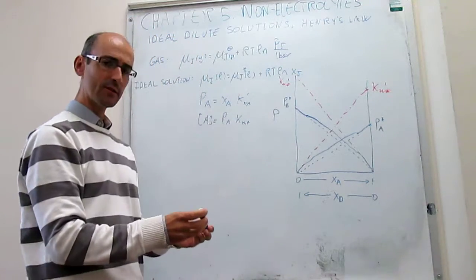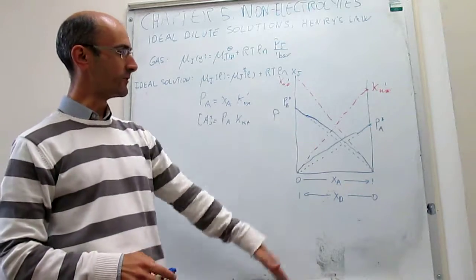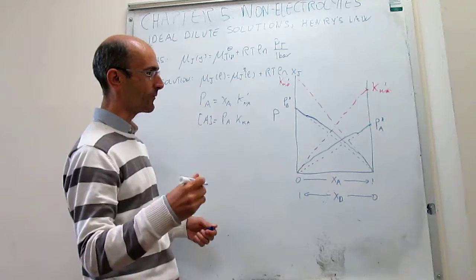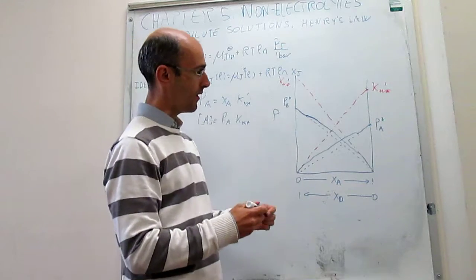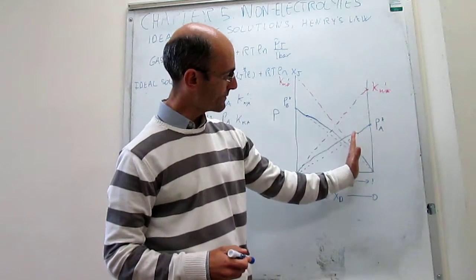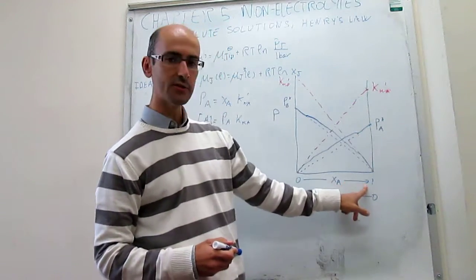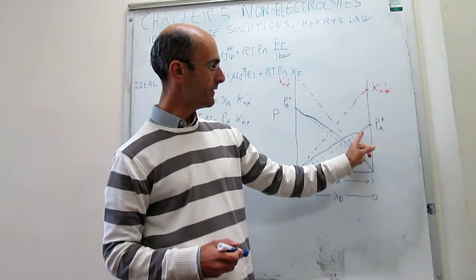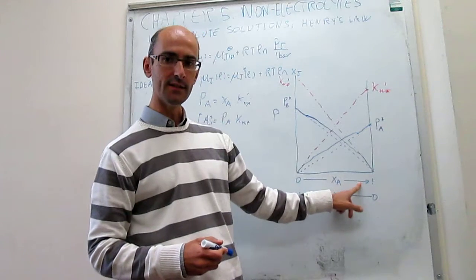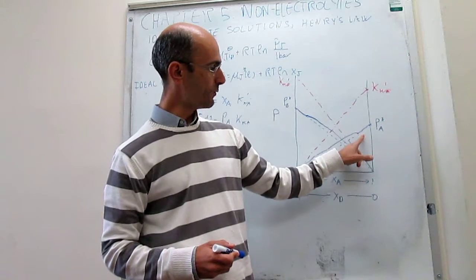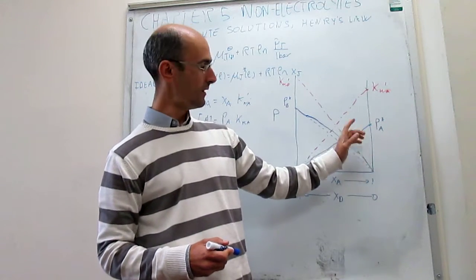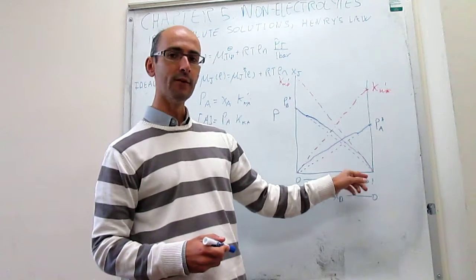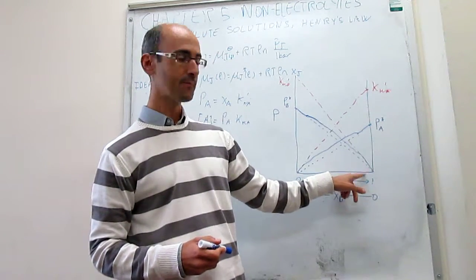Henry's law and Raoult's law are very useful here because at a point where you have high concentrations of A and very low concentrations of B, the component that is the majority — the solvent A — follows Raoult's law, and the component that is the minority — B, the solute — follows Henry's law.